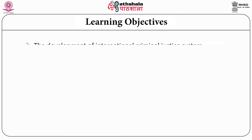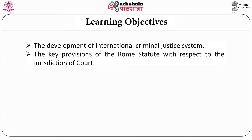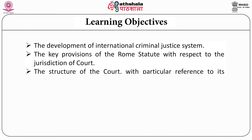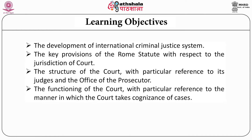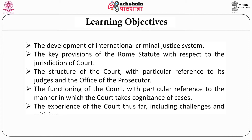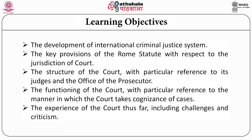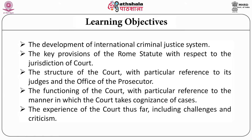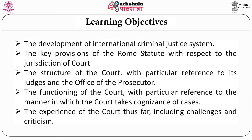What are the learning outcomes? On completing this module, the reader is expected to understand: first, the development of international criminal justice system from ad hoc tribunals to the court; two, the key provisions of the Rome Statute with respect to the jurisdiction of the court; third, the structure of the court with particular reference to the judges and the office of the prosecutor; also, the functioning of the court with particular reference to the manner in which the court takes cognizance of cases; and the experience of the court thus far, including some pitfalls, challenges and criticism.